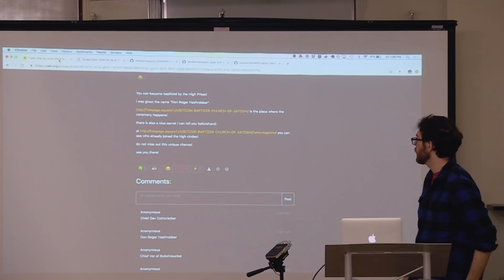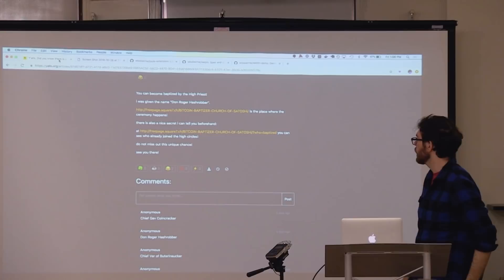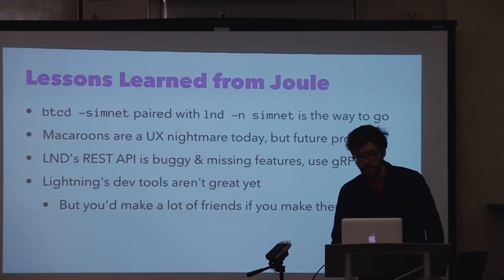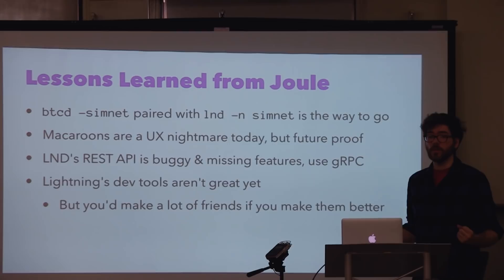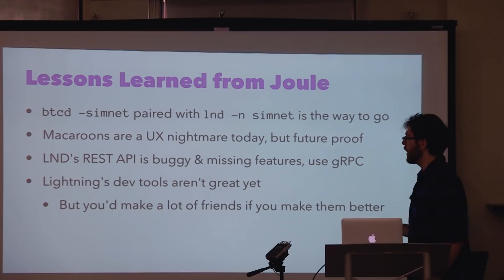Let me talk about some lessons I learned while building Juul. It took me a couple days to figure it out, but btcd SimNet and running an LND node locally on SimNet is like the greatest thing in the world. You don't have to futz around with block times, testnet faucets, any of that stuff. And it works — as far as I can tell — perfect feature parity, no crazy crashes. So if you're going to develop something with Lightning, use that combo.